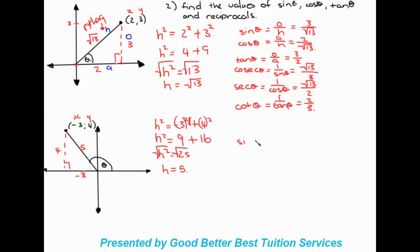Now, sine theta is opposite over hypotenuse. We have a situation though — the angle theta is on the outside of the triangle. So wherever we've constructed our triangle, we make the inside angle correspond to theta as well. With that established, we identify our sides: opposite is over here, adjacent is over here, hypotenuse is over here. So the opposite is four and the hypotenuse is five, giving sine theta equals four over five.